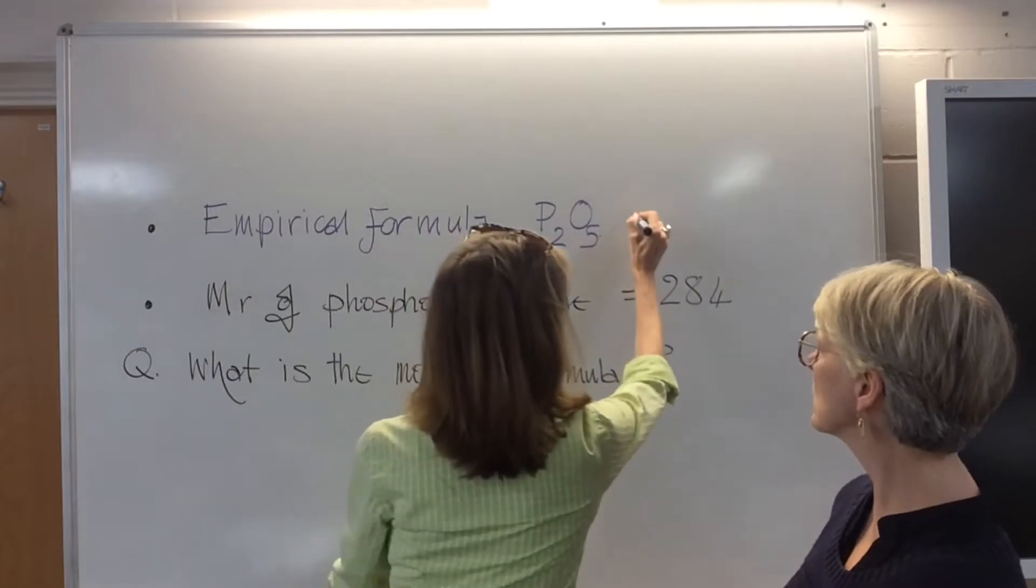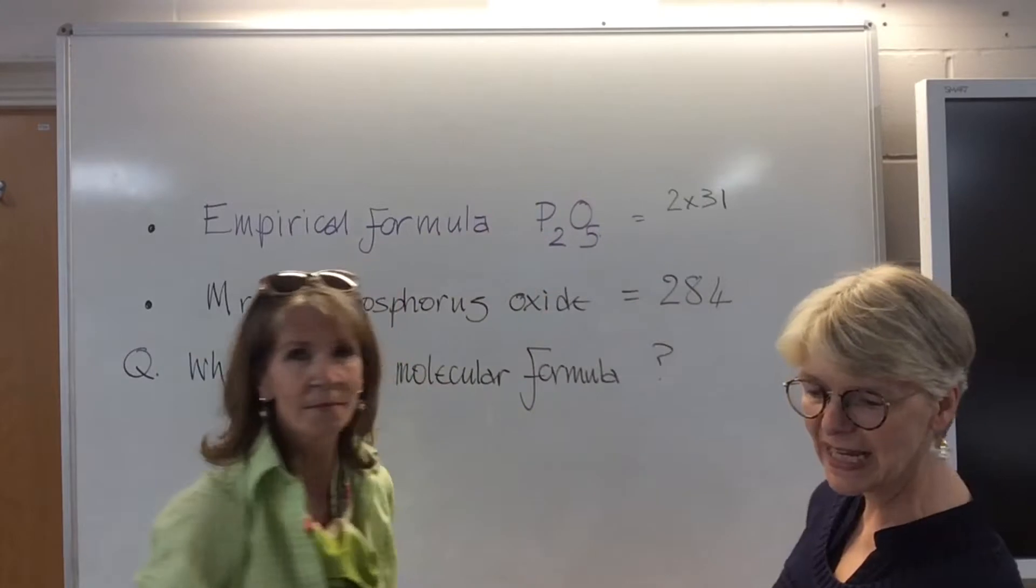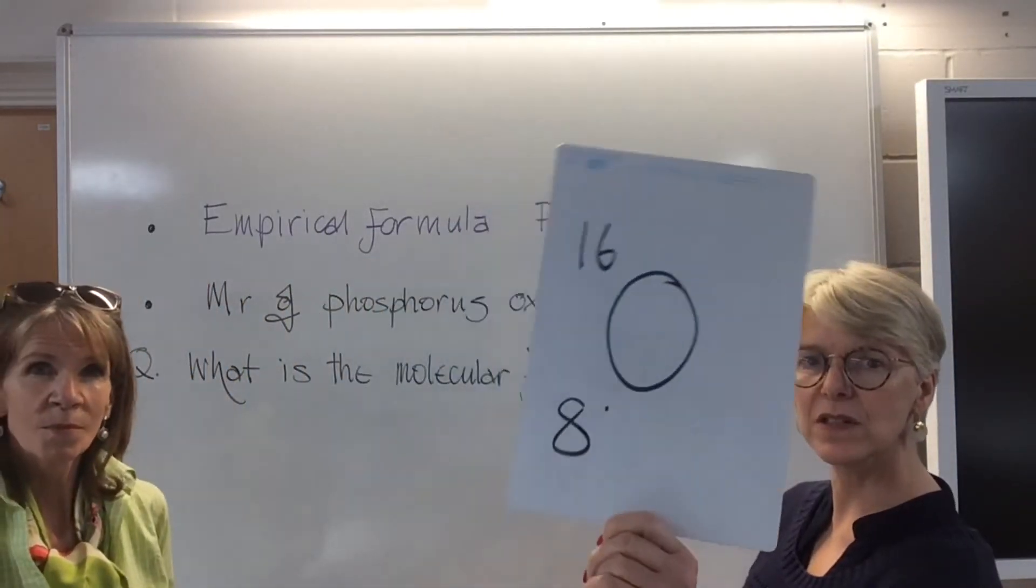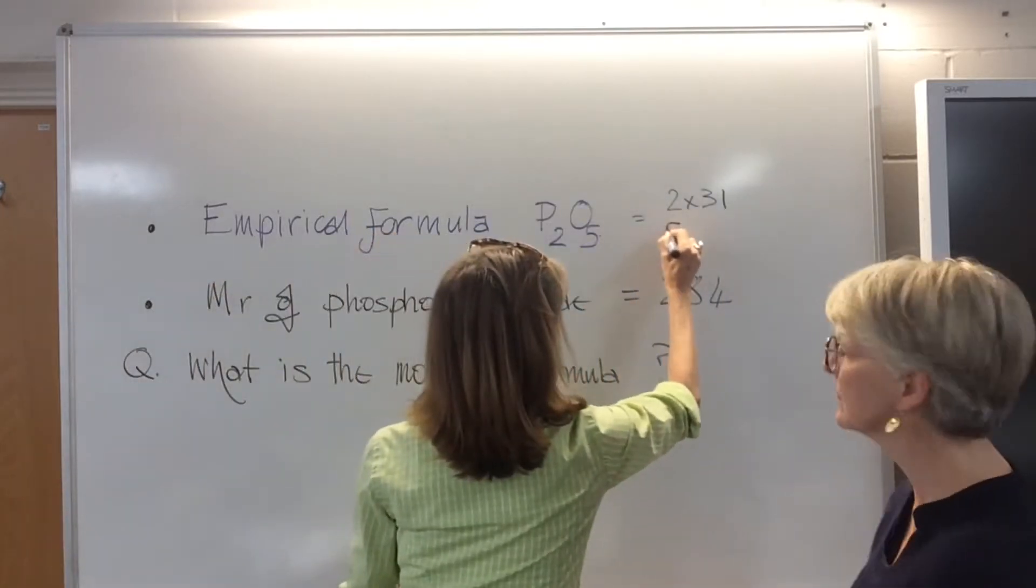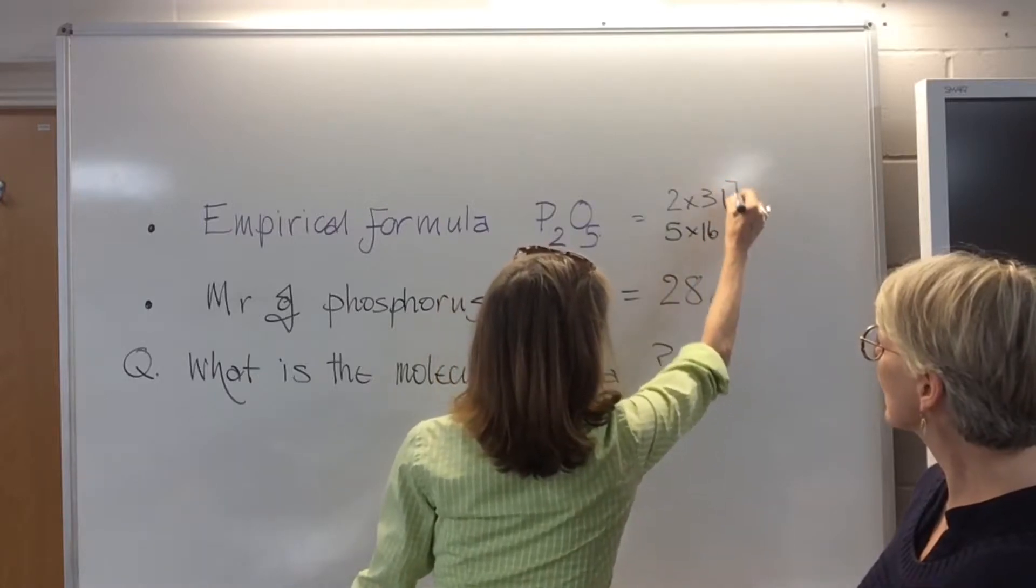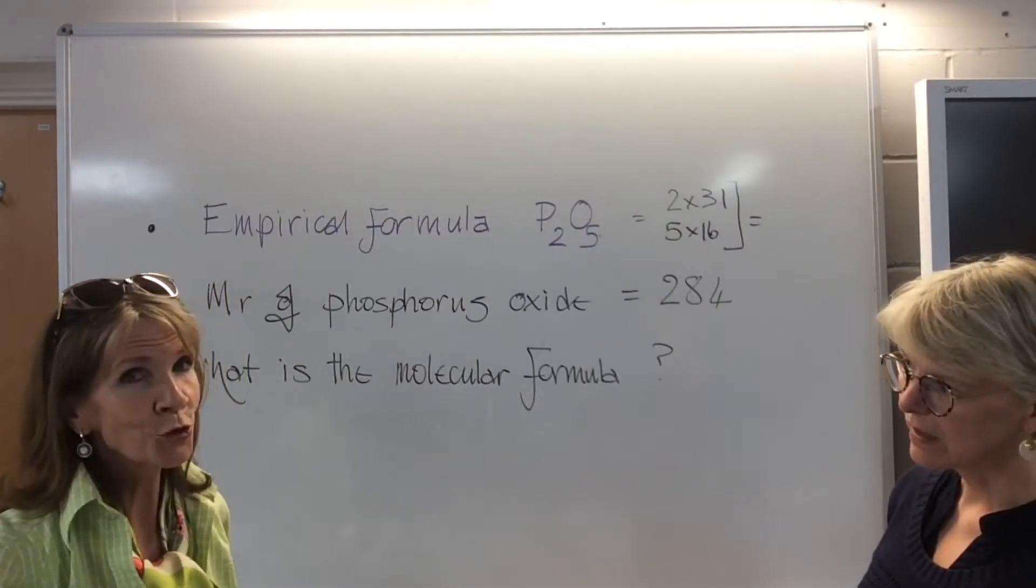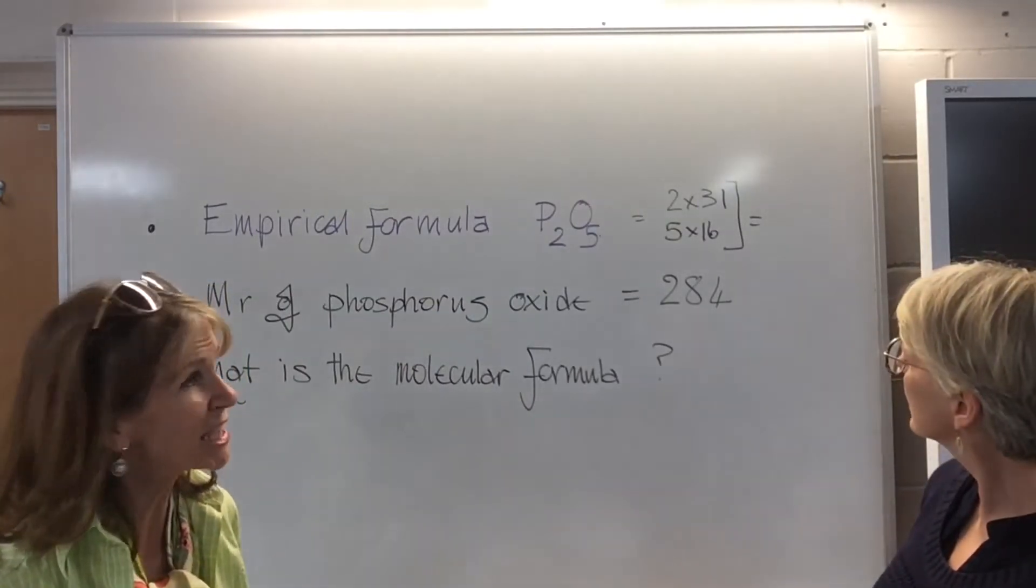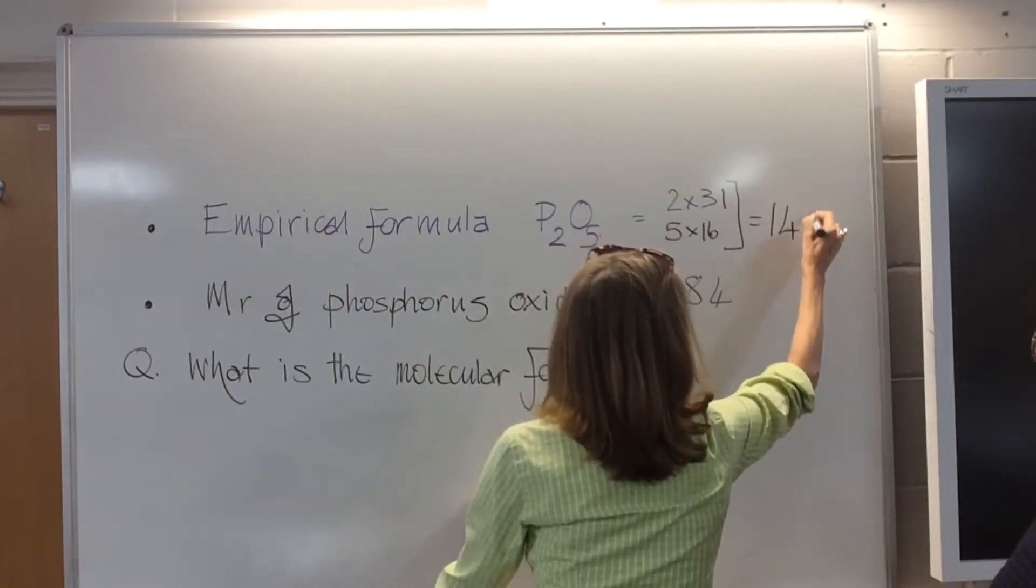So, 2 times 31. So, that would be 2 times 31. Okay, and you've got 5 oxygens, so oxygen is 16, so 5 times 16. So, that's 5 times 16, and if we add those together, we would get, now we're not going to use that old calculator again, I'm going to use my brain. In this case, we get 142.